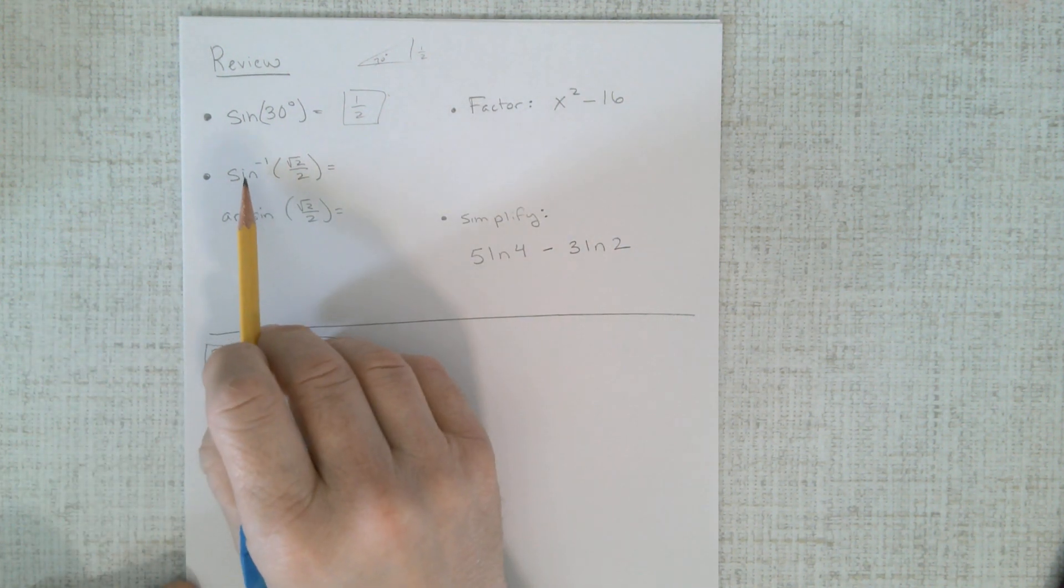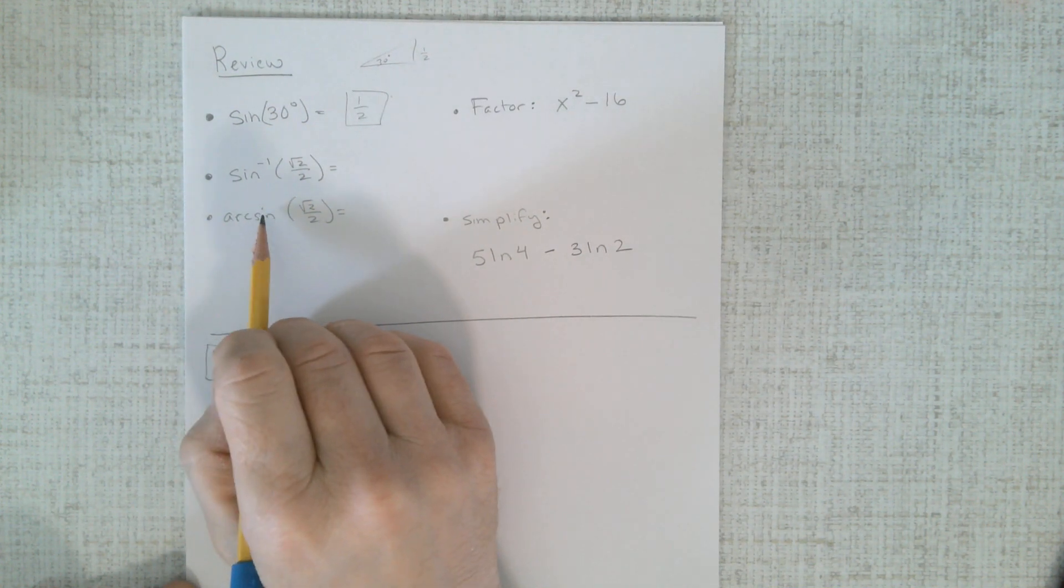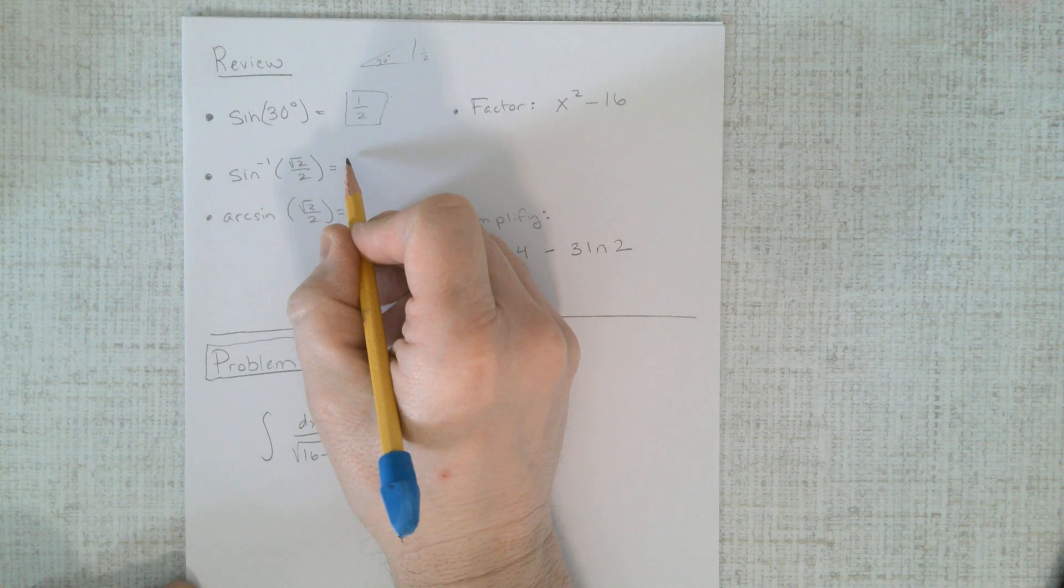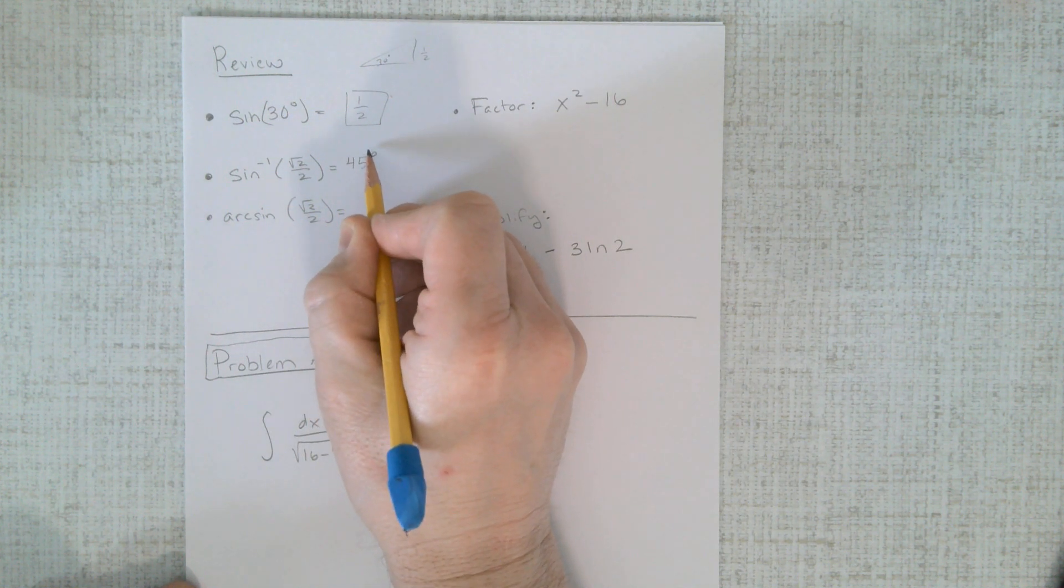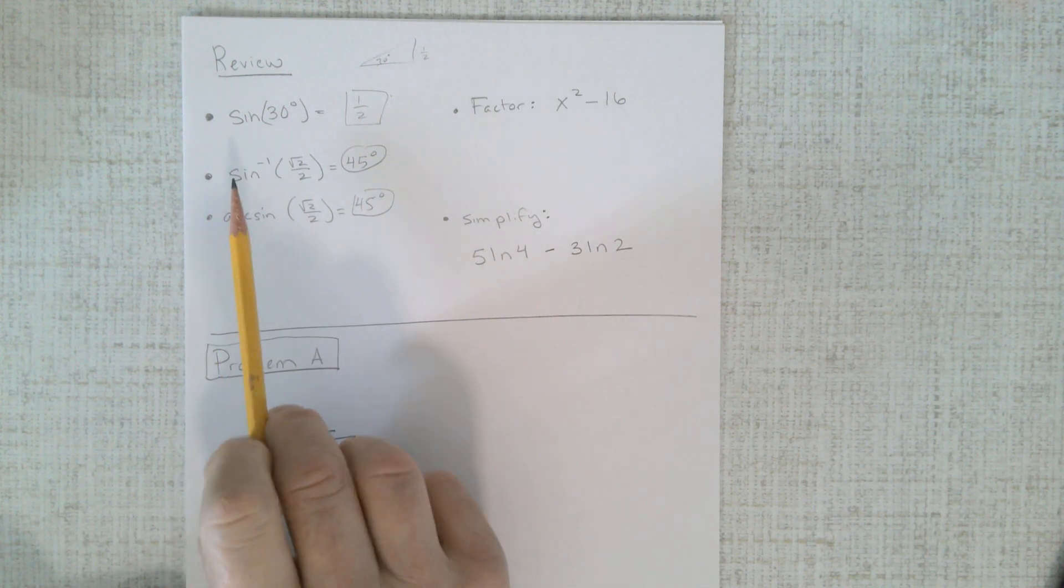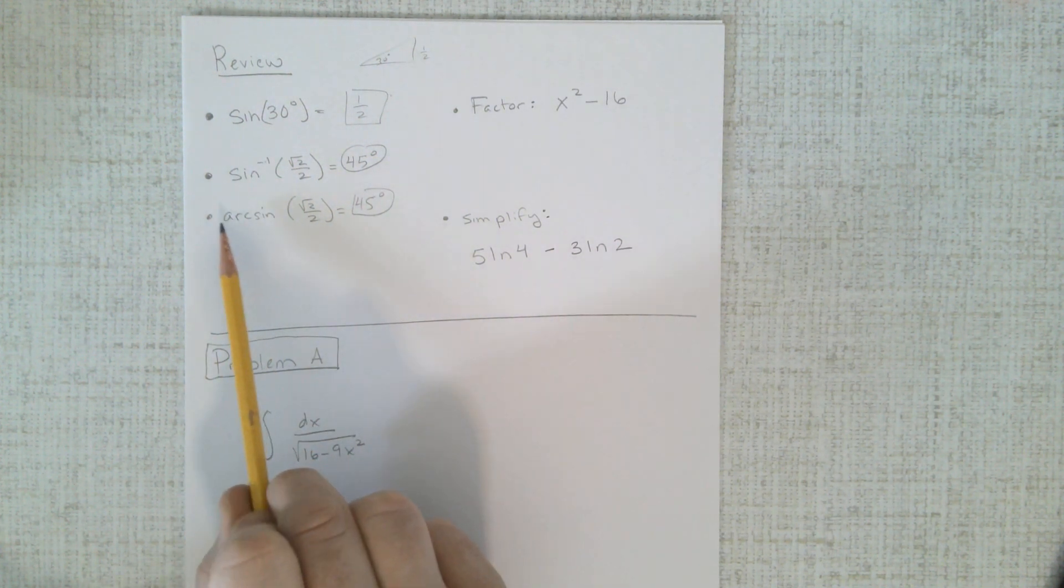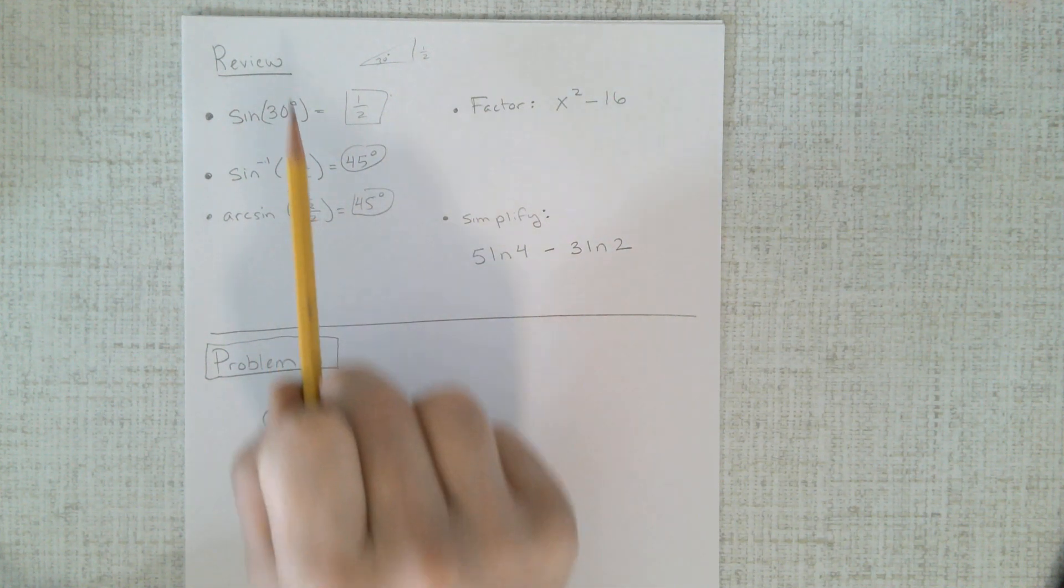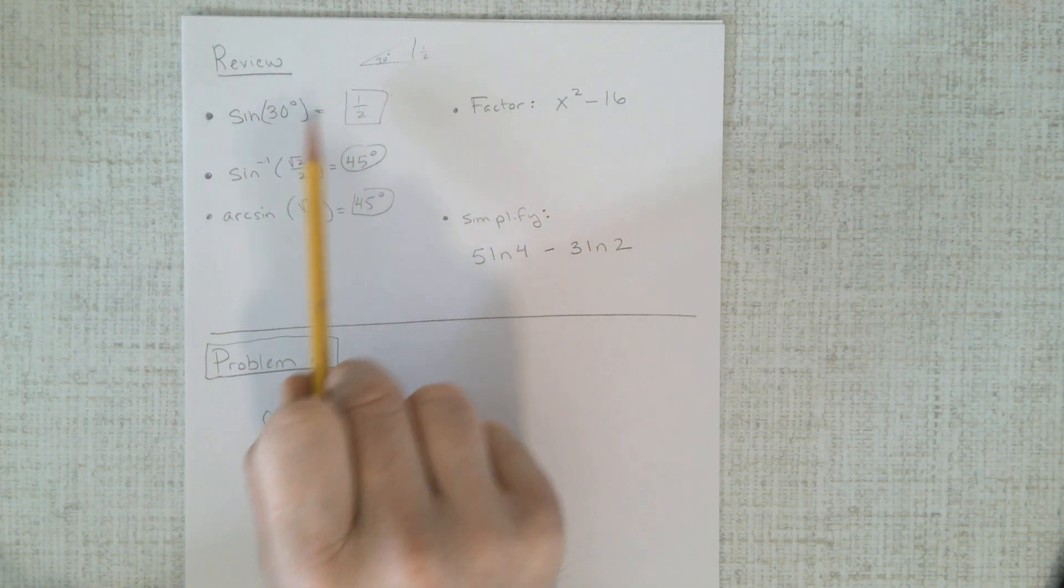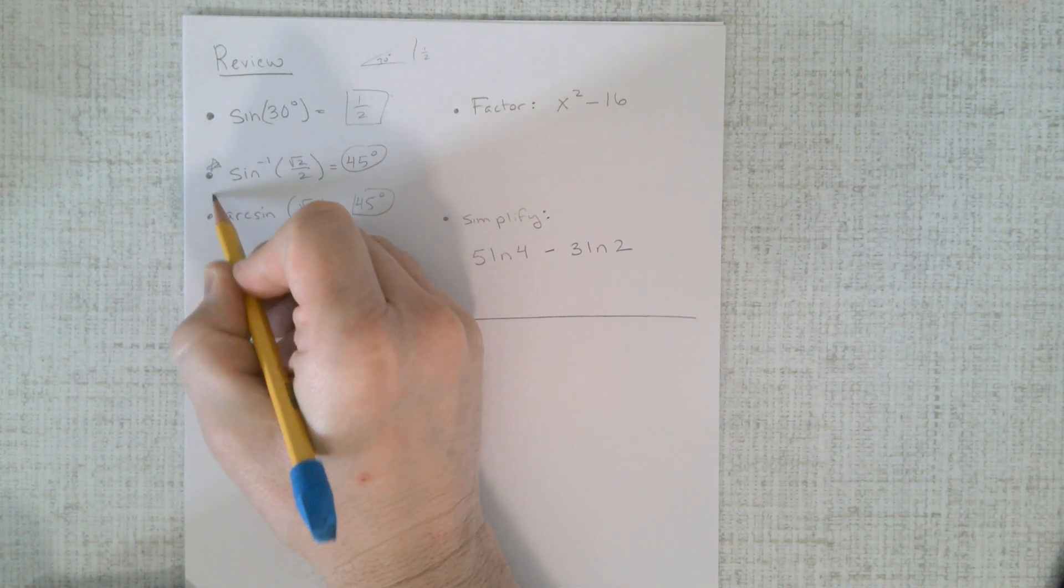But then we have these other two functions, which have sine with a negative one and the words arc sine. And this simply, if you remember, it means just to go back to figure out that angle. And these both mean the exact same thing. So sine negative one is how your calculator writes it. We'll use the words arc sine. It means the exact same thing. This means to find the ratio. This means to find the angle. So we're going to be working with these today in class.